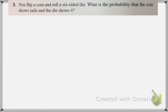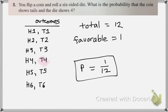All right, go ahead and pause the video and give this problem a try. You're flipping a coin, then rolling a six-sided die. What is the probability if the coin is tails and the die is 4? That is your favorable outcome. All right, go ahead and check your work. We have the outcomes listed and there are 12. There's only one favorable outcome — T4 — so it's 1 out of 12 probability.